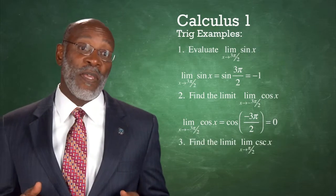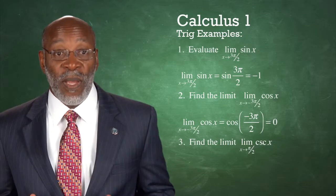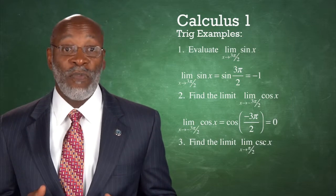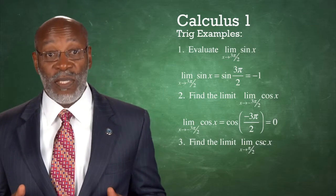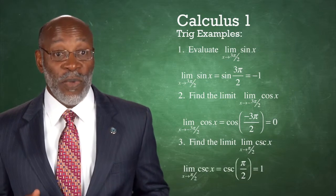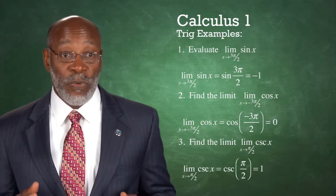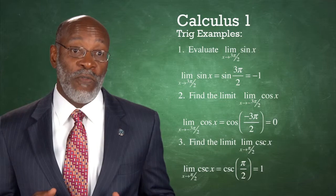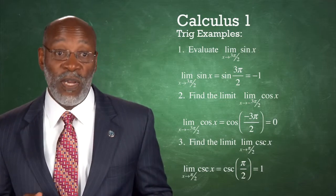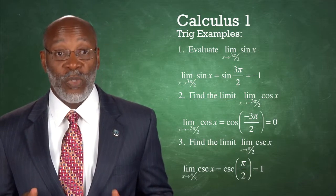Example 3: Find the limit as x tends to π/2 of cosecant x. The limit as x tends to π/2 of cosecant x is equal to the cosecant of π/2, which equals 1.